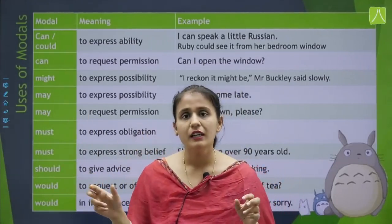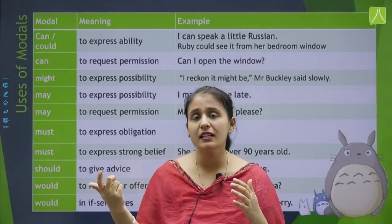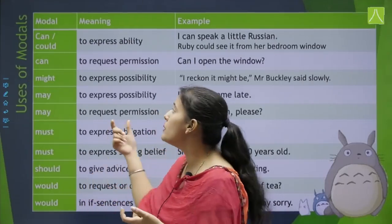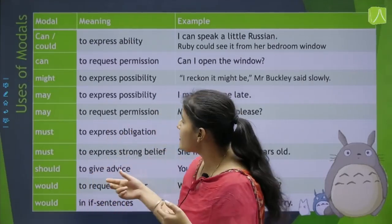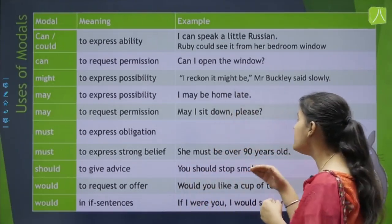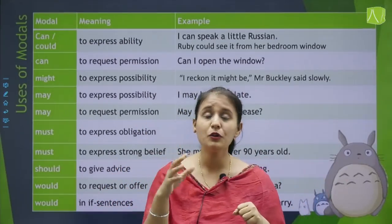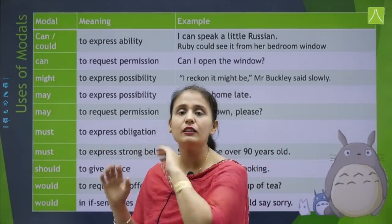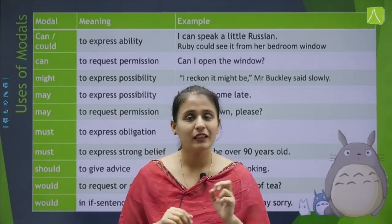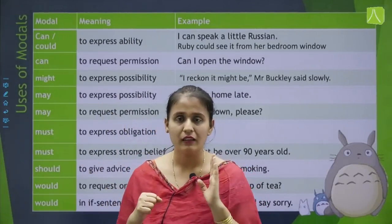Jab bhi aapko koi sentence frame karo ge, to keep in mind ki aapka woh sentence kis direction mein ja raha hai — kya woh ek obligation hai ya fir ek permission? Must bhi ek tarah ki strong belief ke liye bhi use hota hai. 'He must be over 90 years old' — yeh ek bahot strong belief hai ki that particular lady is 90 years old. Yeh mujhe pata hai — that is your strong belief.